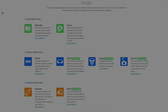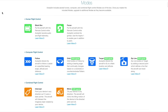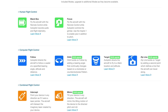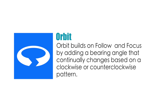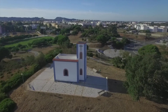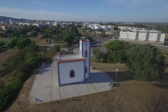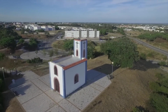Welcome to Autopilot. This video from AutoflightLogic focuses on Autopilot's Orbit feature, one of the many modes available. Orbit builds on follow and focus by adding a bearing angle that continually changes based upon a clockwise or counterclockwise pattern. More simply, it sends your quadcopter around a center point at a given radius. This video is intended to provide you an overview of how to use the Orbit feature effectively.